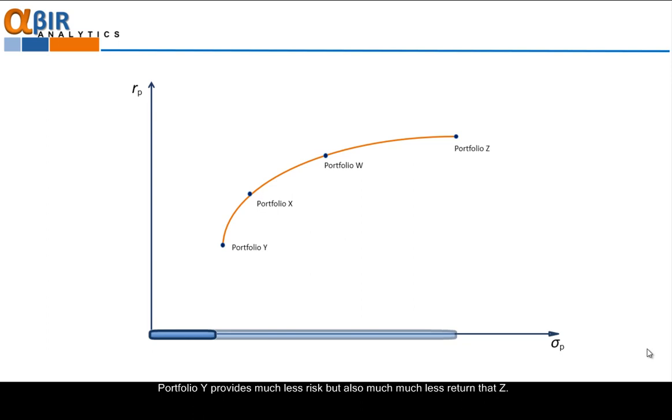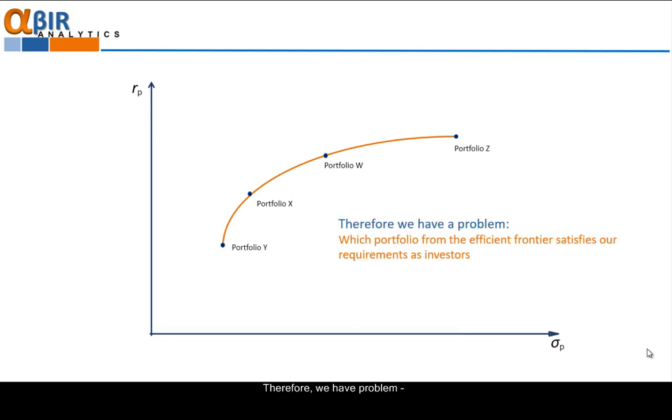Portfolio Y provides much less risk but also much less return than Z. Therefore, we have problem. How to decide which portfolio from the efficient frontier satisfies our requirement for expected return and risk? To answer to this question, let's see what are the risk return characteristics of a portfolio.